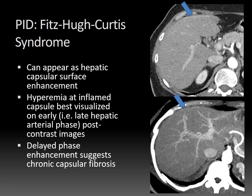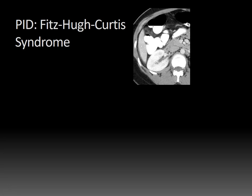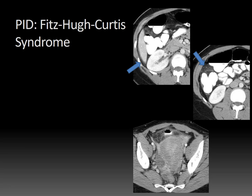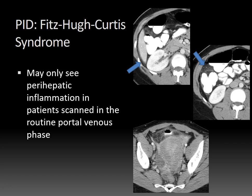If you see delayed phase enhancement such as in the portal venous phase, that usually suggests more chronic capsular fibrosis with ongoing capsular inflammation. On a portal venous or routine phase image, you typically see perihepatic inflammation causing fat stranding rather than capsular hyperemia. The kidney enhancement here indicates we're in the nephrographic phase, past the hepatic arterial phase which occurs about 30 to 35 seconds post-injection and corresponds to corticomedullary enhancement. You can see the right omental and pericolonic fat inflammation extending up from this patient with extensive pelvic inflammatory disease.